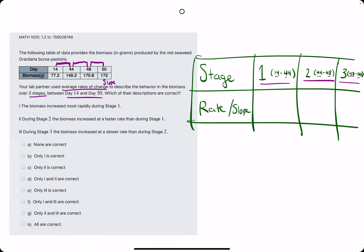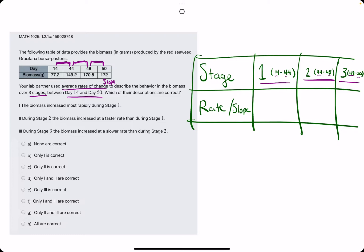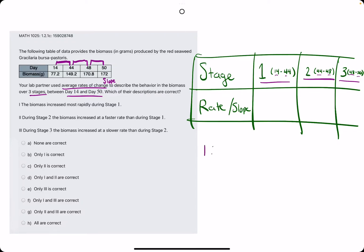So we're going to find the rate of change for each of these stages. So stage 1, we will do Y2, or I guess really biomass 2 minus biomass 1, kind of like Y2 minus Y1, and divide it by the day 2 minus day 1. So for stage 1, we will have between 14 and 44. So we have the biomass of 149.2 minus 77.2, all divided by 44 minus 14.